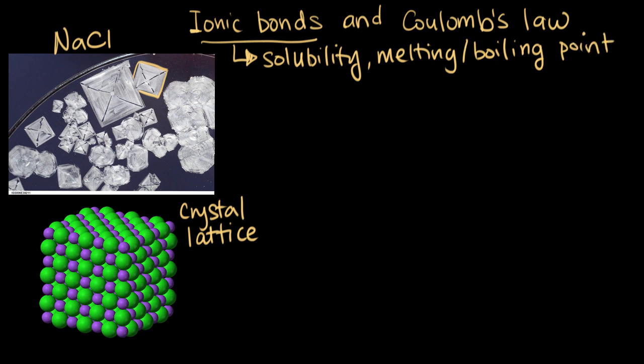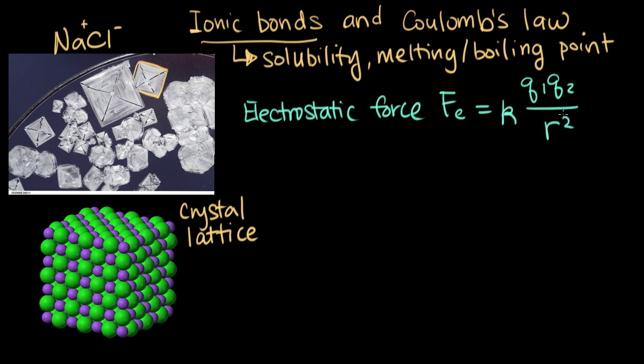The ionic bonds here in sodium chloride are the ones that hold together our sodium ions and our chloride ions, our sodium plus and our chloride minus. The strength of an ionic bond is related to the electrostatic force. I'm going to abbreviate the electrostatic force as FE. This is the force between two charged species, and it's equal to some constant K times the two charges that are interacting, divided by the distance between the two charges squared.